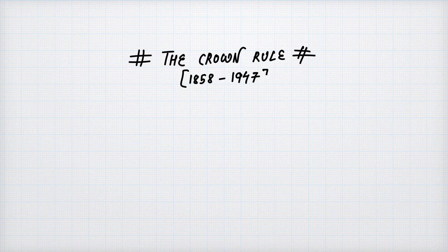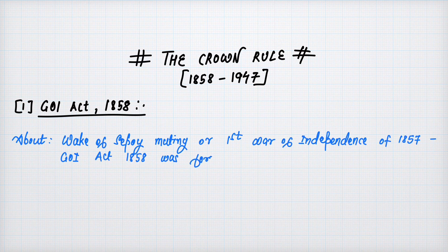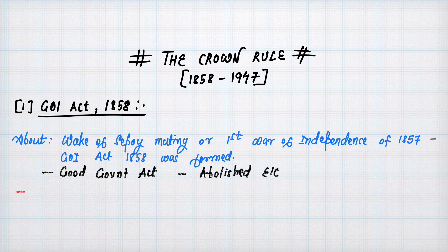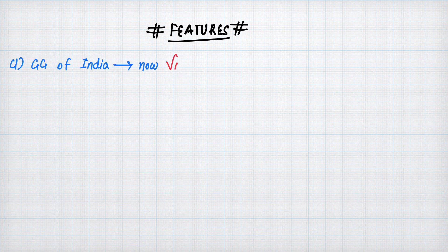Now moving to crown rule — from 1858 to 1947, we will look at all acts in detail. This topic will continue in the next video. First: Government of India Act 1858. After the revolt of 1857, the British felt the need for good governance and introspection. They abolished the East India Company and transferred the powers of government, territories, and revenues to the British Crown.